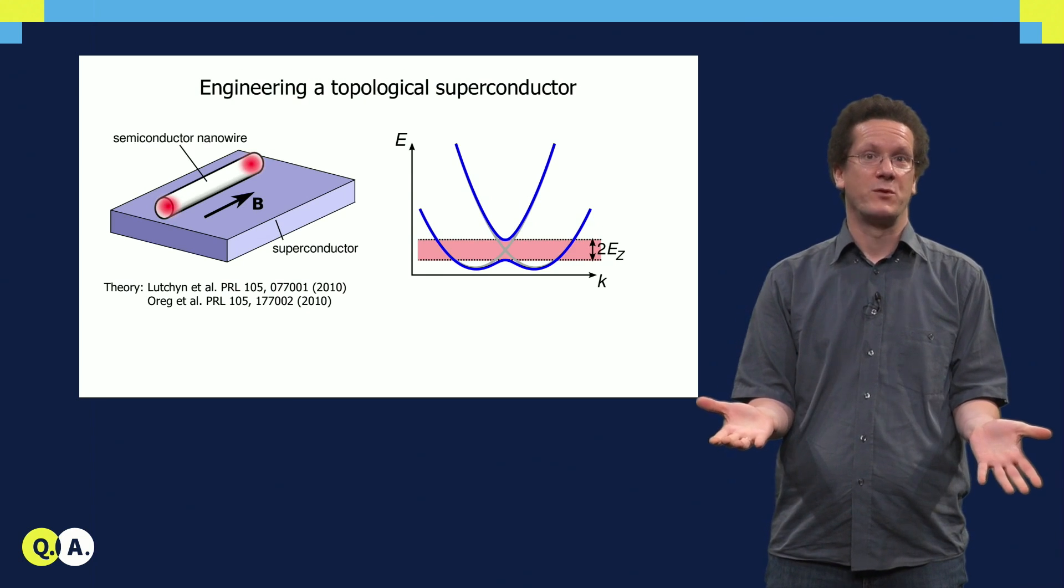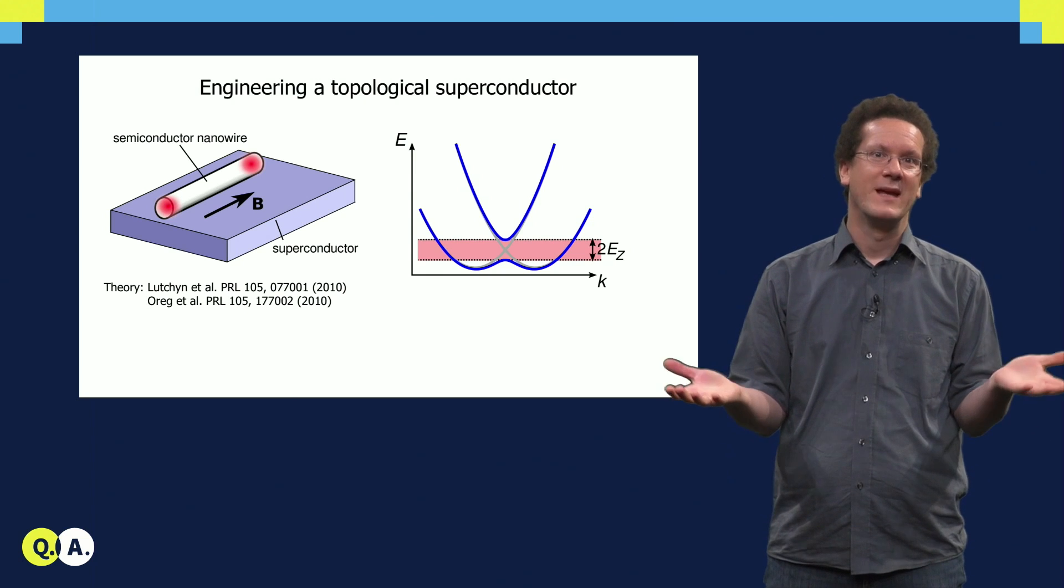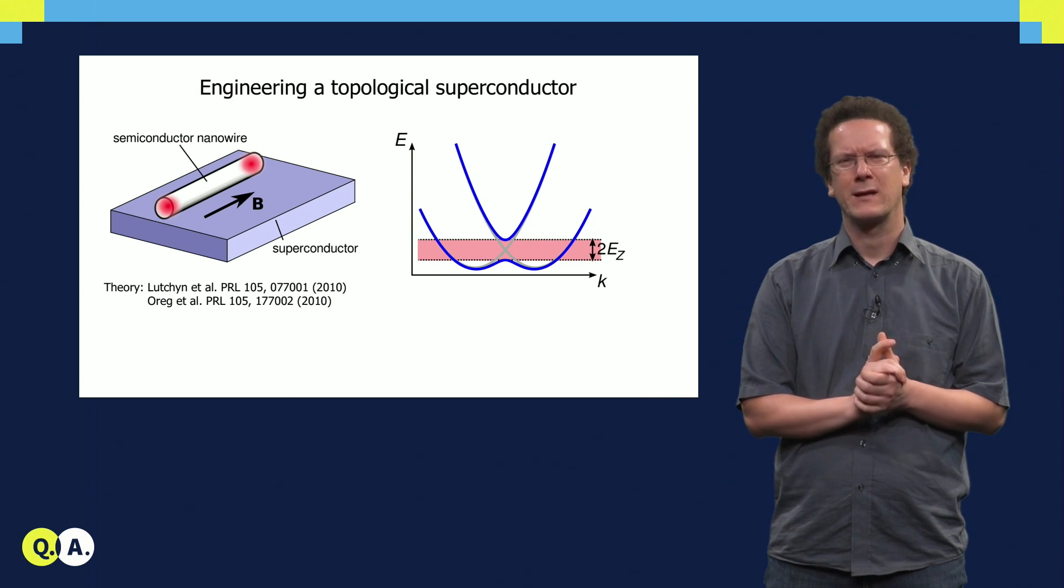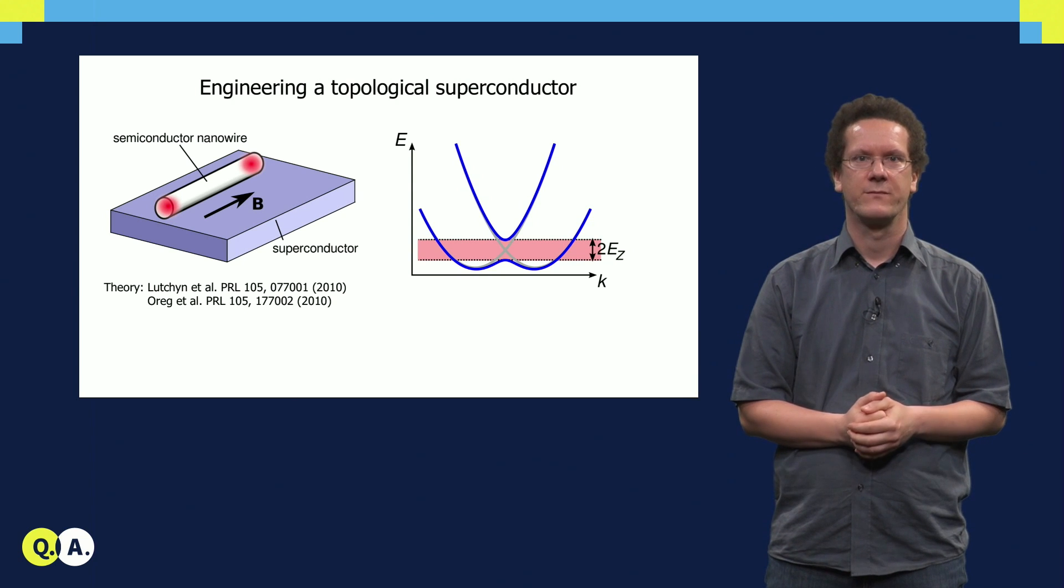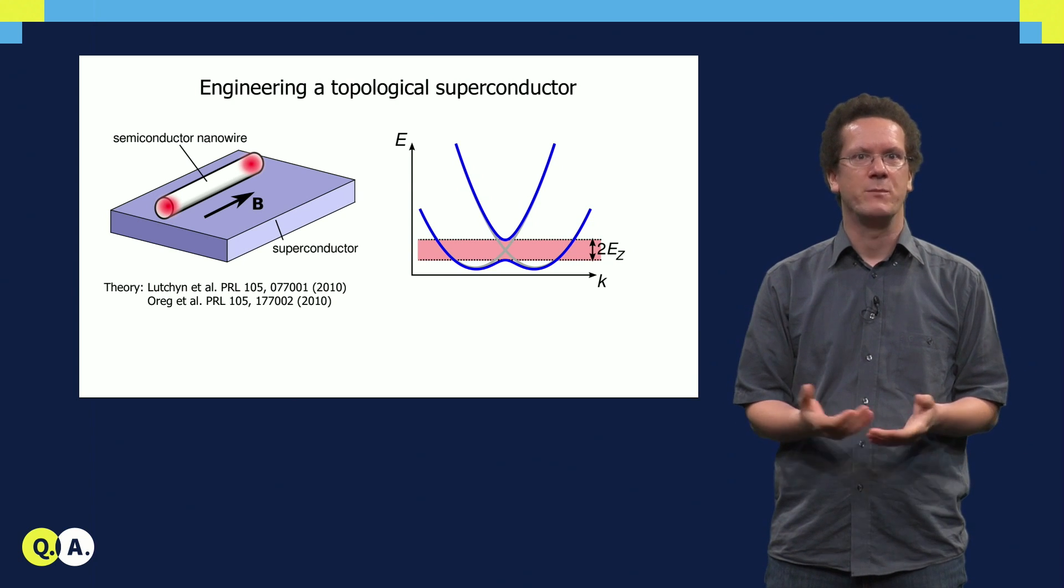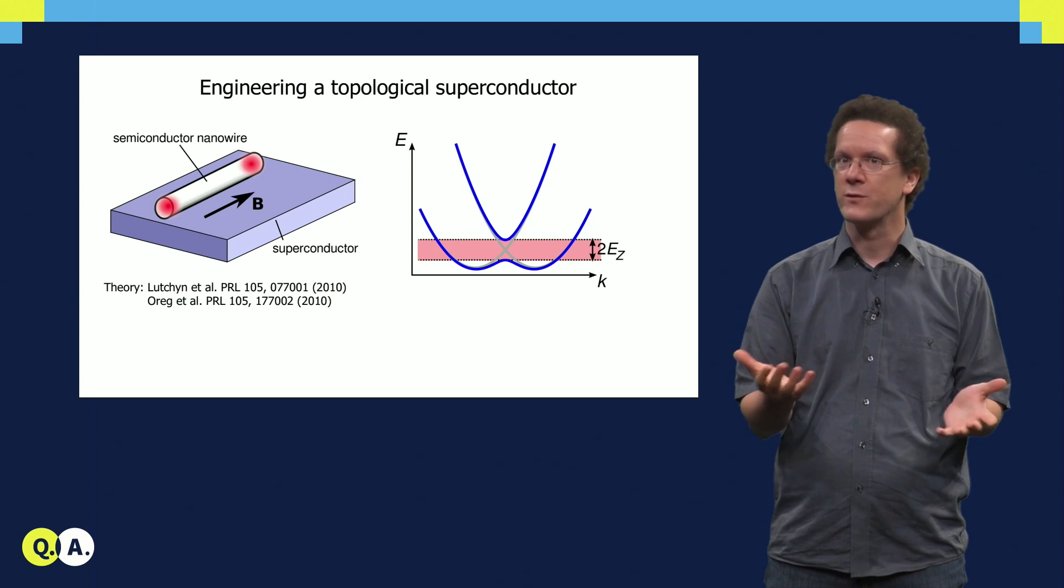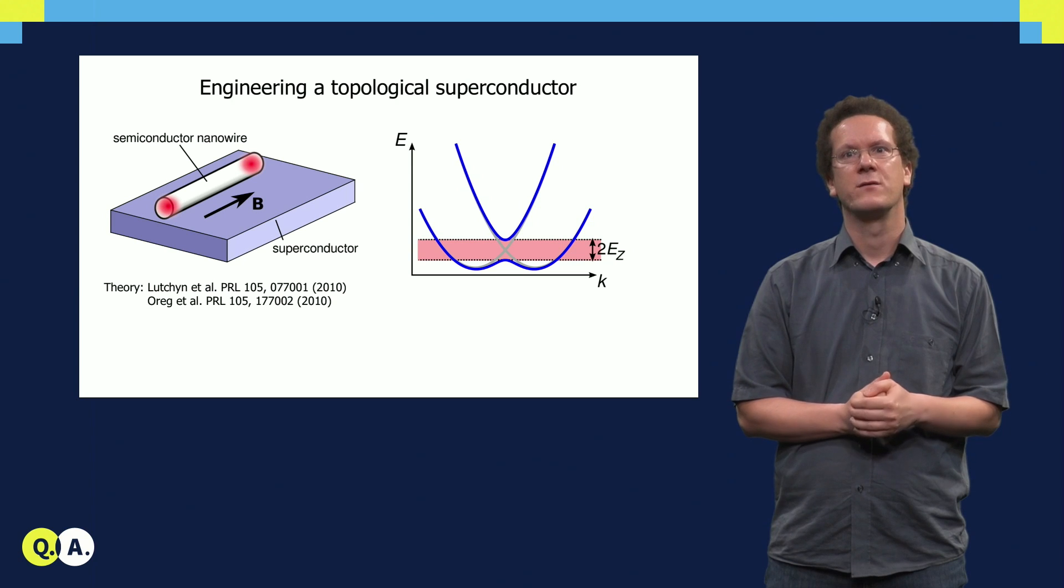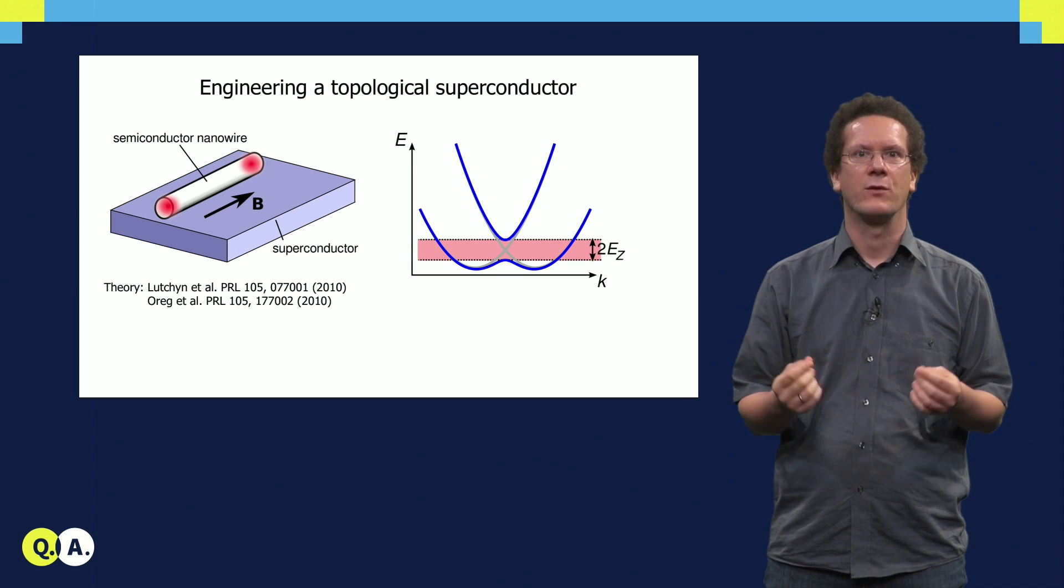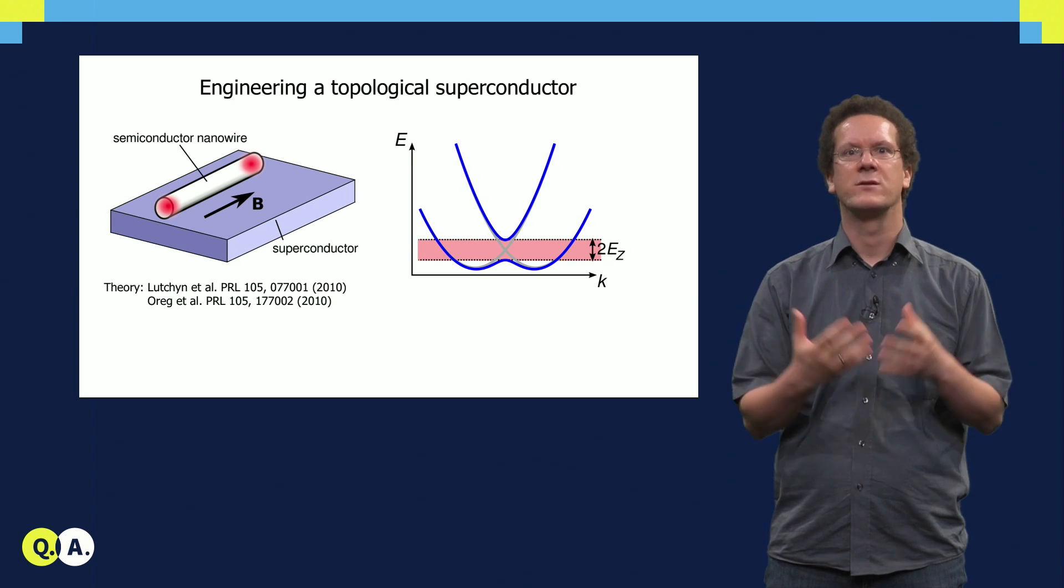So, a p-wave superconductor would be nice to have. But it turns out that all the superconductors in nature that we know of are just trivial superconductors. There are some candidates that might be p-wave superconductors, but nobody knows for sure. The most promising approach is thus to engineer the p-wave superconductor out of normal, ordinary, trivial materials.